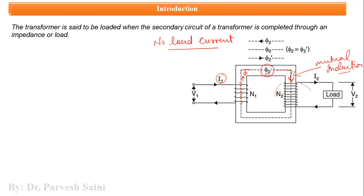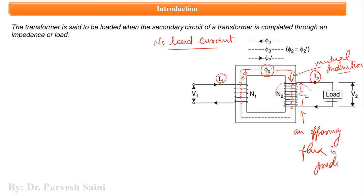Because of mutual induction, an EMF e2 is induced in the secondary winding. As soon as you connect a load to the secondary winding, current i2 flows, and this produces an opposing flux — let us call it phi2. This flux phi2 is produced by i2 and it opposes the main flux phi-naught.